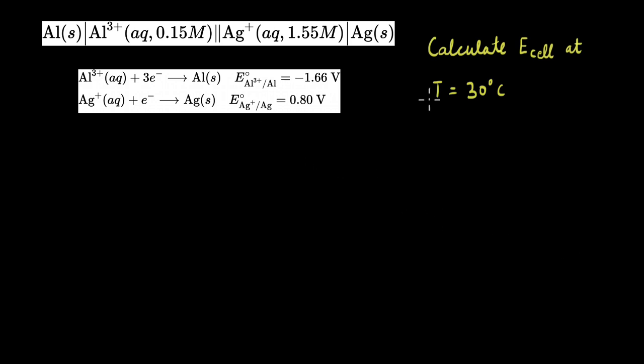The first thing to notice is that this temperature here is not the standard temperature that we use to calculate the E naught, which is 25 degree Celsius. To calculate the cell potential at a temperature different from the standard temperature, we use the Nernst equation, which is written like this.